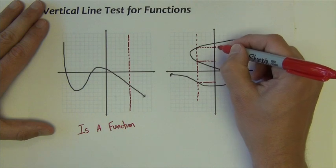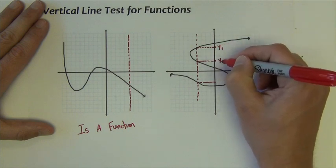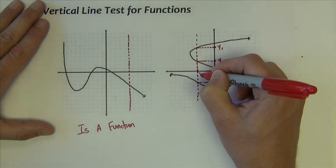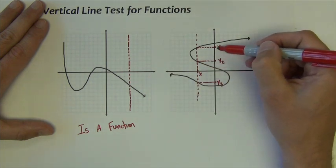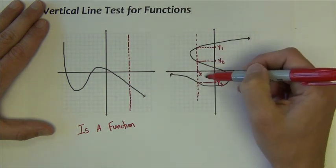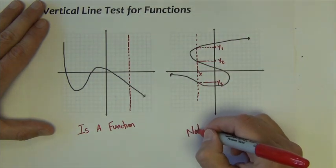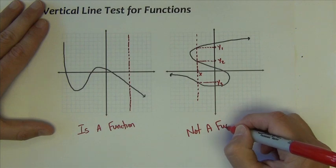So what we can see is this particular x value maps to a y1, a y2, a y3. This particular x has three y values, so this is not a function.